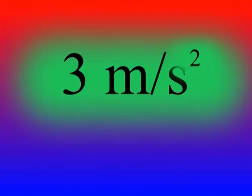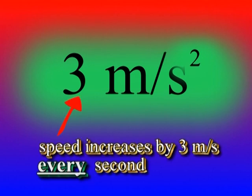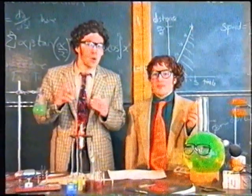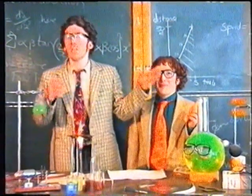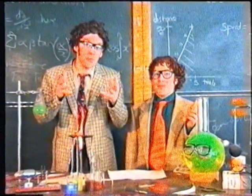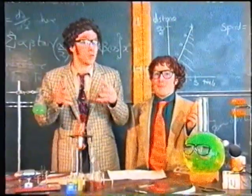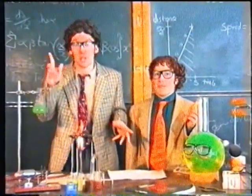So, what does that mean? Well, if an object has an acceleration of 3 meters per second squared, it means its speed increases by 3 meters per second every second that goes by. Acceleration tells us how fast the speed of an object is changing.